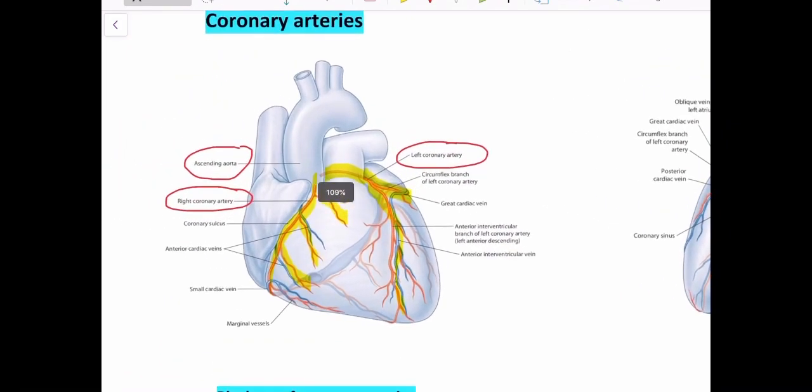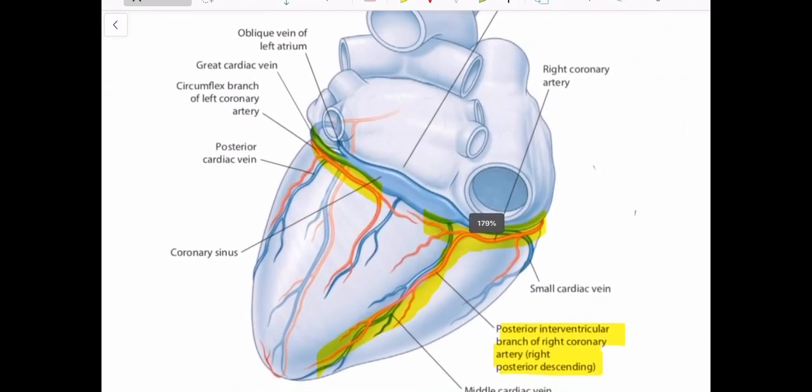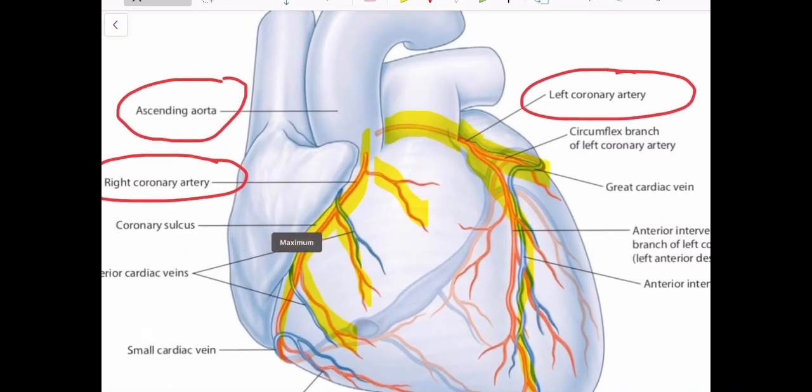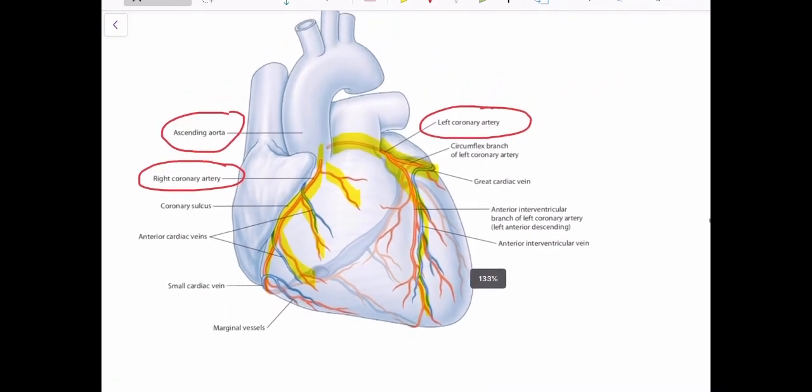As there is an arterial system, there is a venous system to drain deoxygenated blood. These cardiac veins ultimately drain into a thing called coronary sinus, which is in the back of the heart. Then this coronary sinus drains into your right atrium in an opening between the inferior vena cava and the right AV orifice. This is how these vessels are formed.